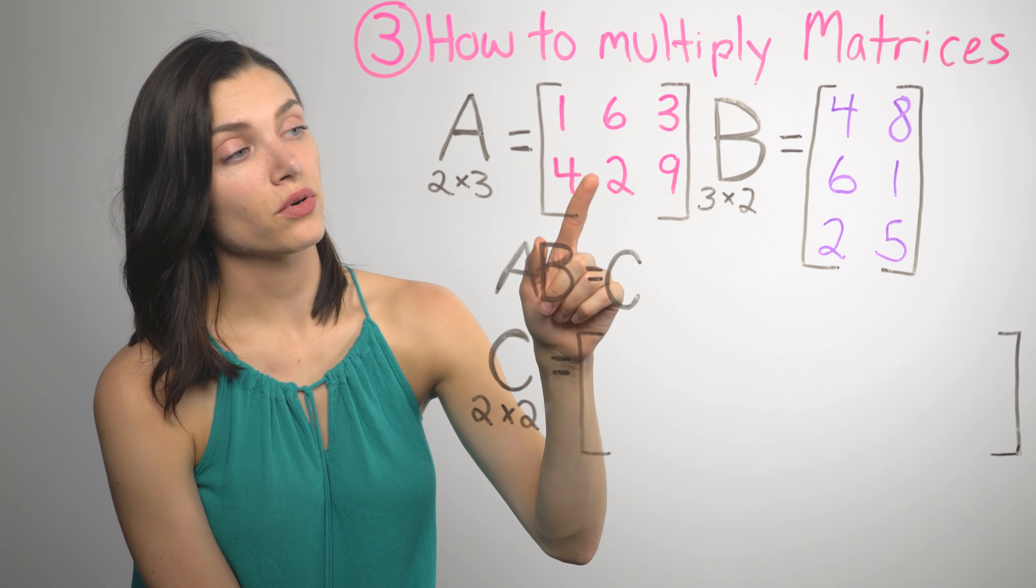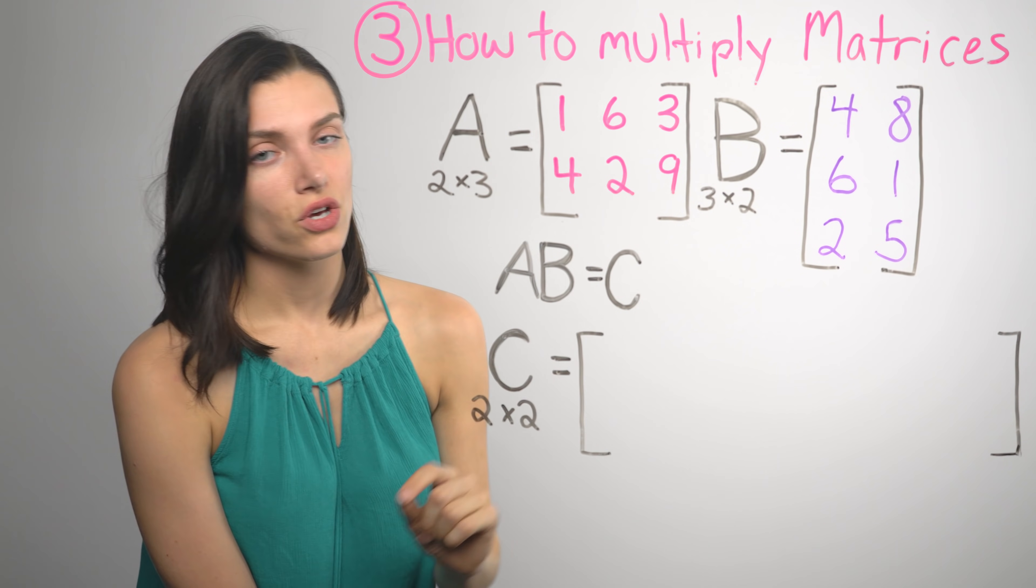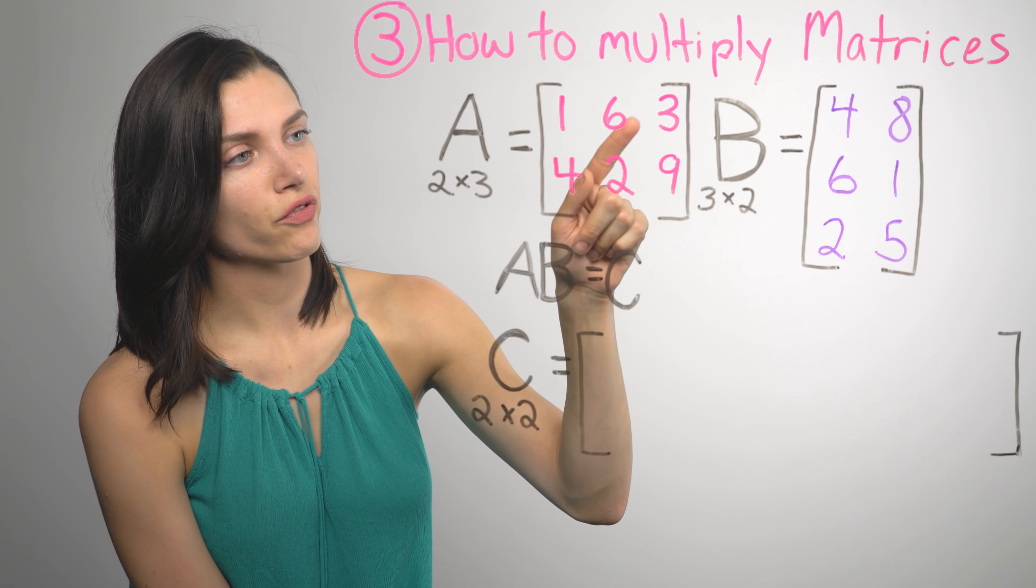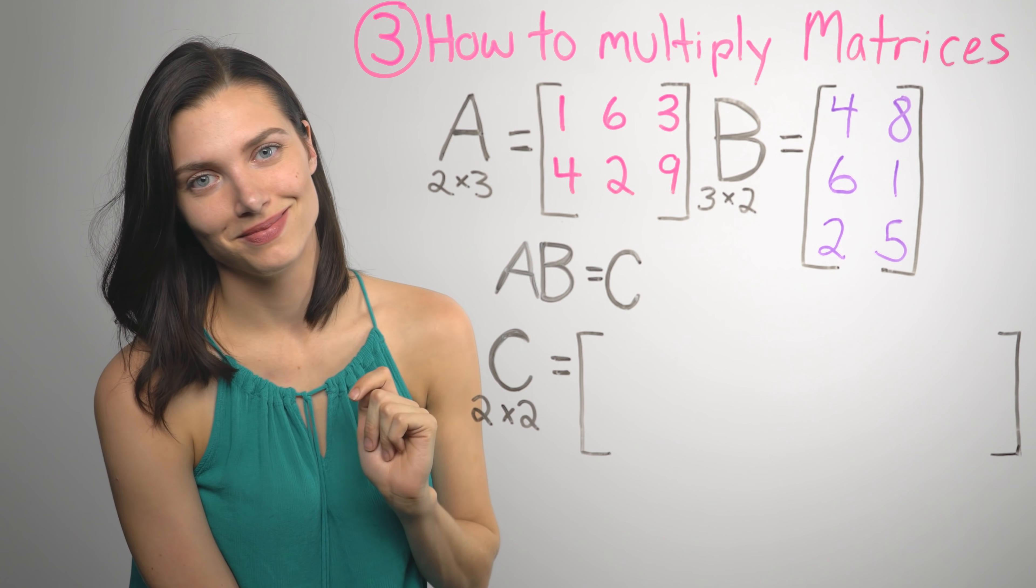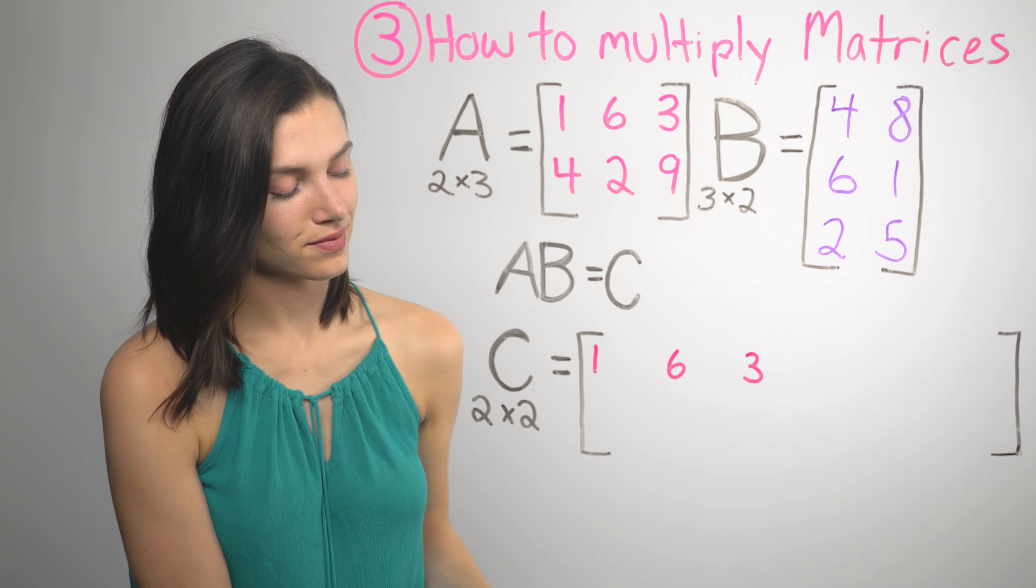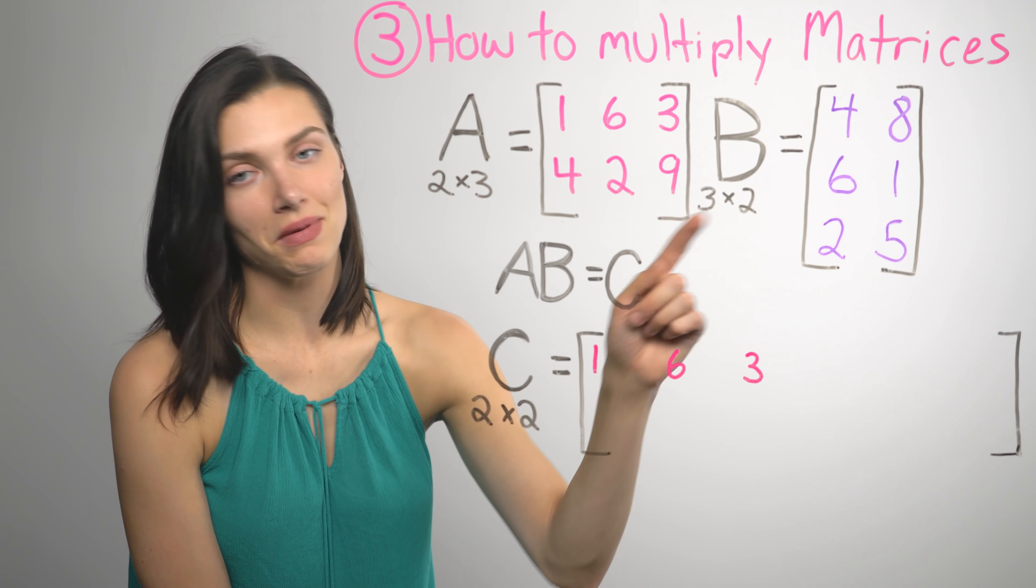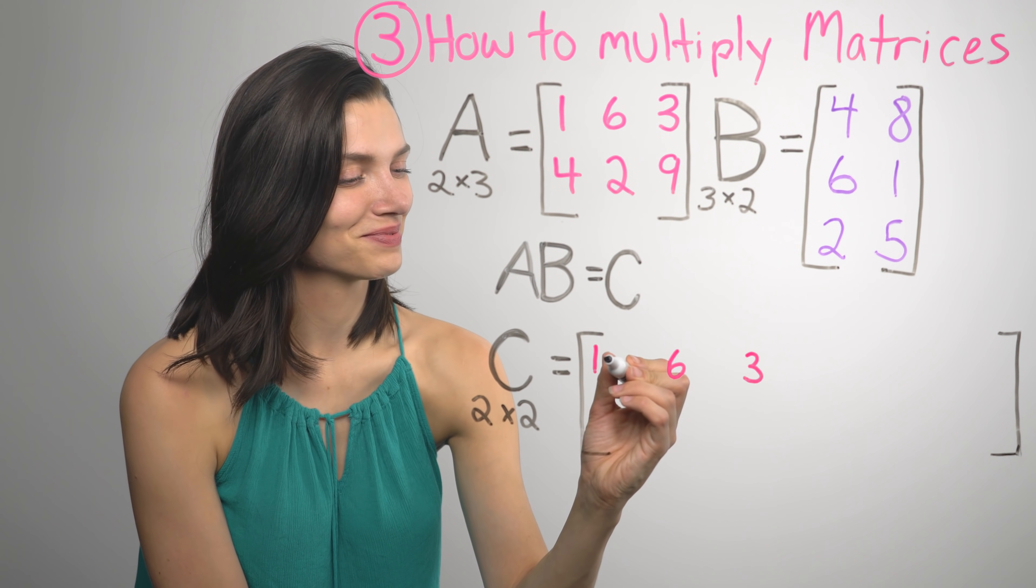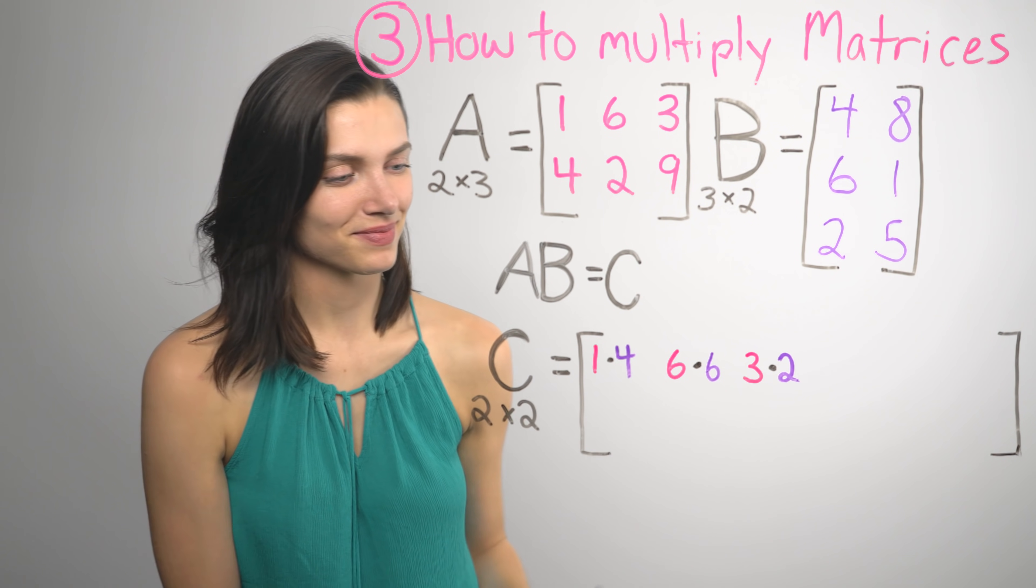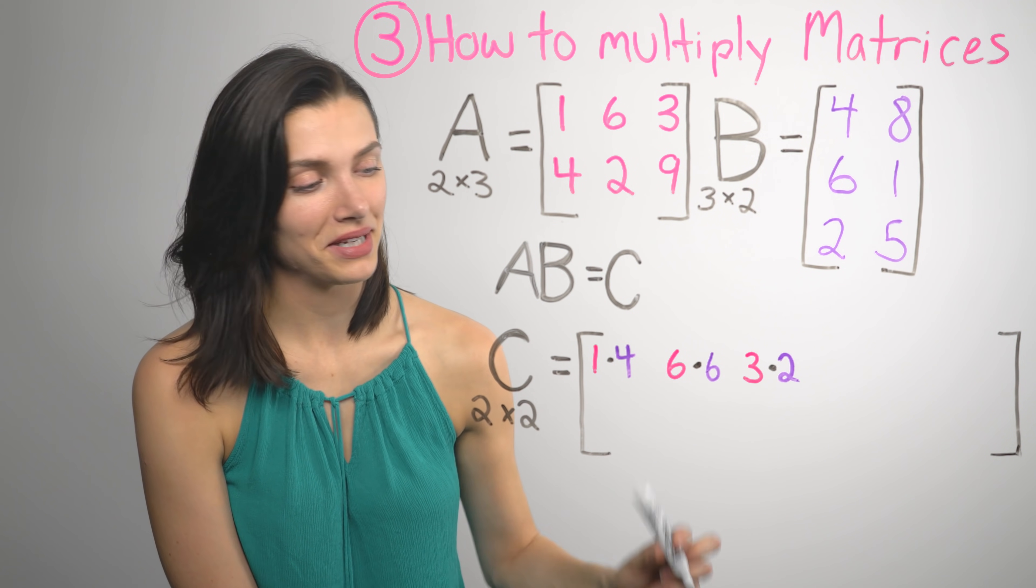That's why the number of columns in the first matrix have to match the number of rows in the second matrix. So for the first element in C, let's begin with the numbers in the first row in matrix A. Now we multiply each of those by the numbers in the first column in matrix B. Finally, we take the results of all the multiplying and add them together to get the new element.